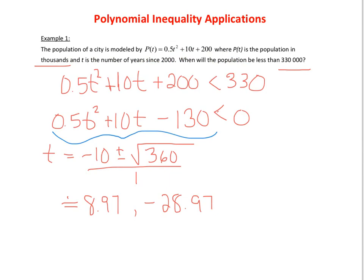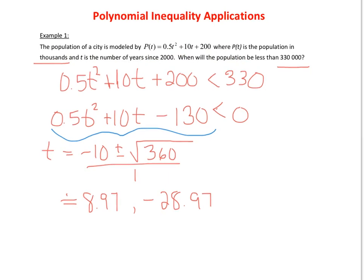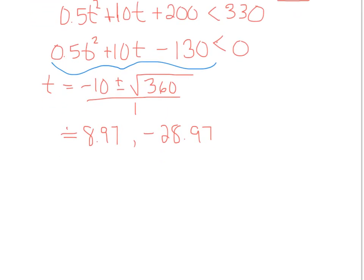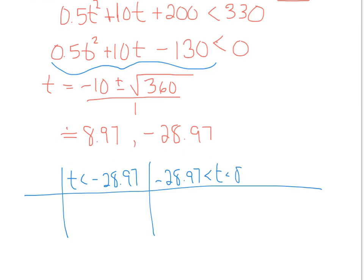Okay, so we're going to need to set up our interval table now, as we do for all inequalities algebraically. Okay, and of course we want our intervals. We want when t is less than negative 28.97. We want in between those two numbers.